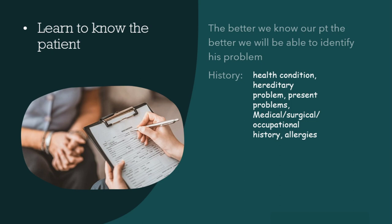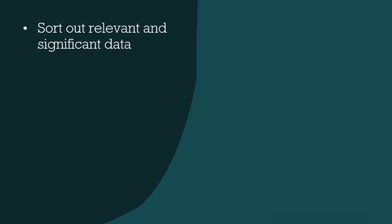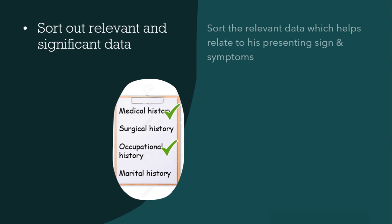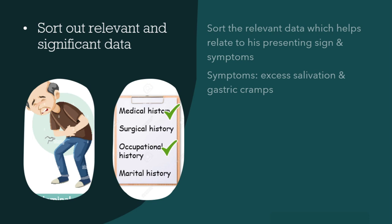Next is sort out relevant and significant data. From the different categories of data we collect, we have to sort the relevant data that helps us understand the cause of the patient's present problem, relating to his presenting signs and symptoms. For example, a farmer who comes with symptoms of excess salivation and gastric cramps — as soon as we take his occupational history, we can make out it's possible organophosphorus poisoning, that is, poisoning from pesticide.